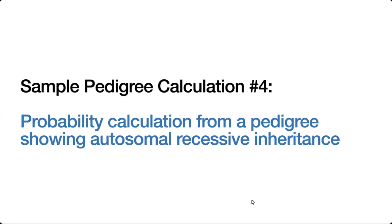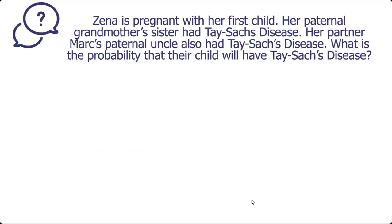Here is a sample probability calculation from a pedigree showing autosomal recessive inheritance. The question states: Xena is pregnant with her first child. Her paternal grandmother's sister had Tay-Sachs disease. Her partner Mark's paternal uncle also had Tay-Sachs disease. What is the probability that their child will have Tay-Sachs?